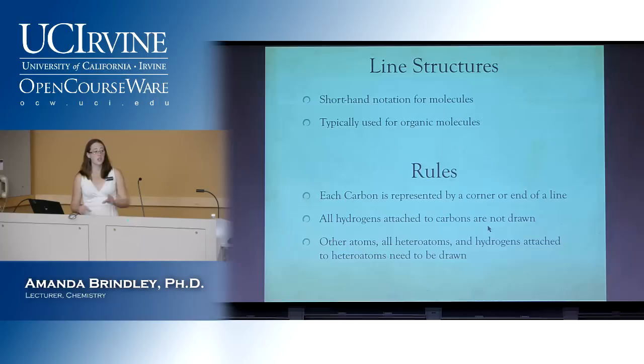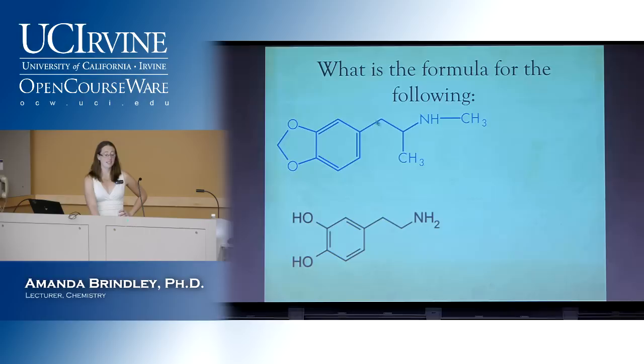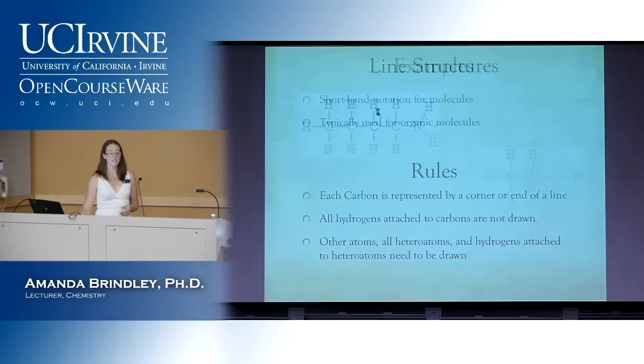Any time you come to the end of a line and there's not some other atom written there, that's a carbon too. You assume carbon is going to have four bonds, so if carbon has four bonds already drawn in, you don't need to do anything else. But if a carbon only has two bonds shown, that means it has two more bonds somewhere — and you can assume those are hydrogens. We just don't draw them in. So a carbon with two bonds here must have two hydrogens attached that we just can't see. That saves a lot of time when drawing these out.